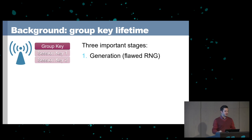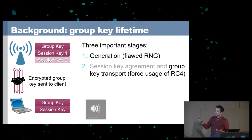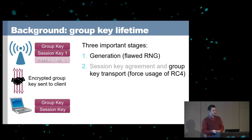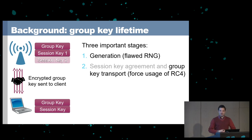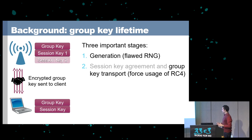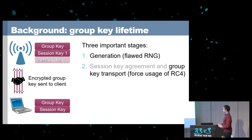What do I mean by the lifetime of a group key? When you start your router, the first thing that happens is it generates a fresh random group key. We noticed that the random number generator used to generate this group key is flawed. The standard suggests a bad RNG as a reference implementation, and in practice certain vendors also implement a predictable RNG, which allows us to predict the group key.